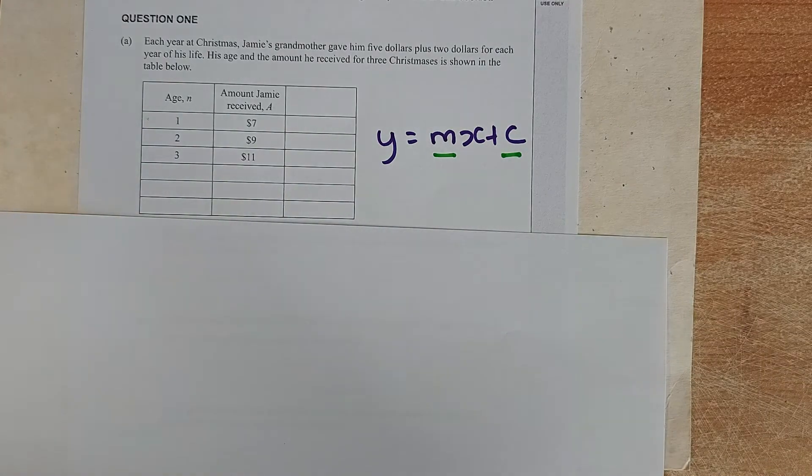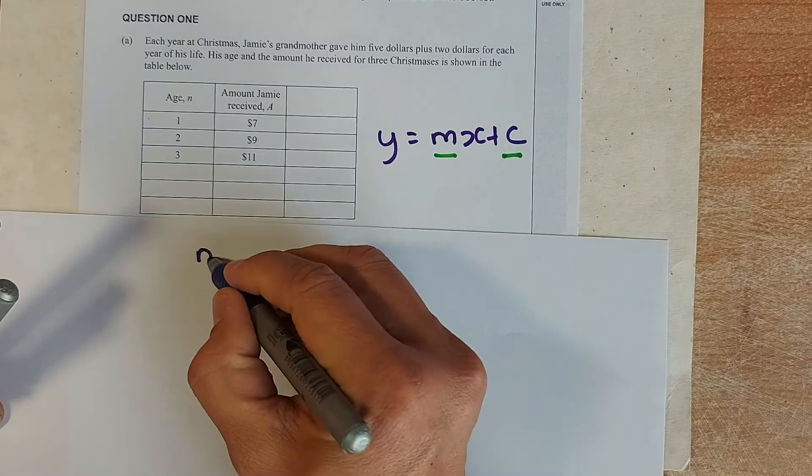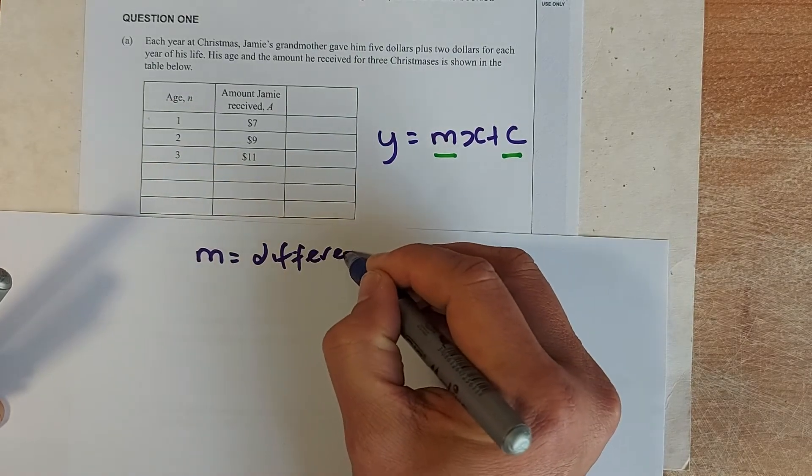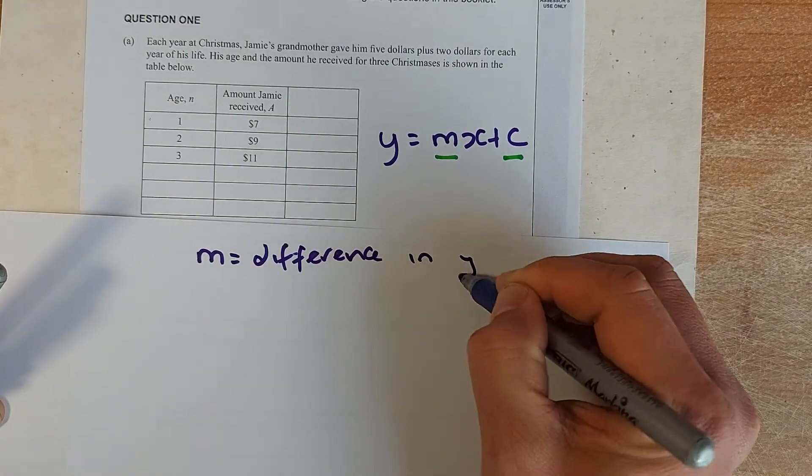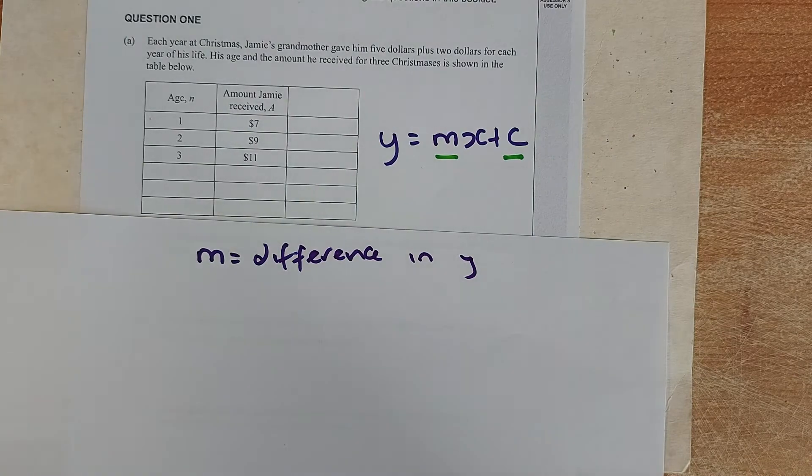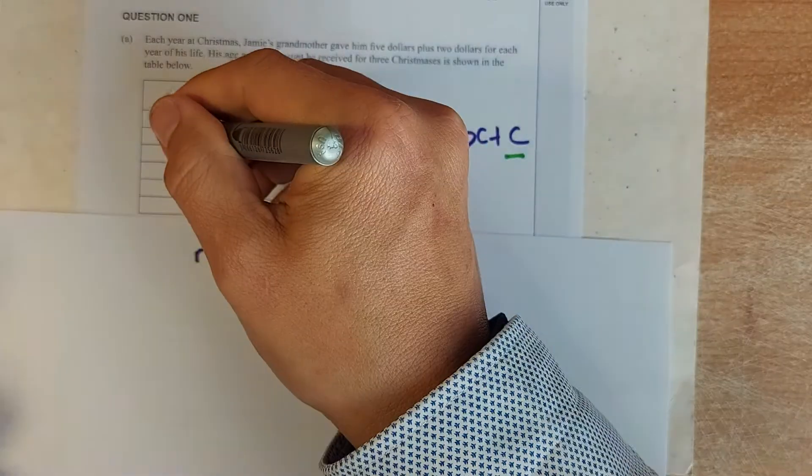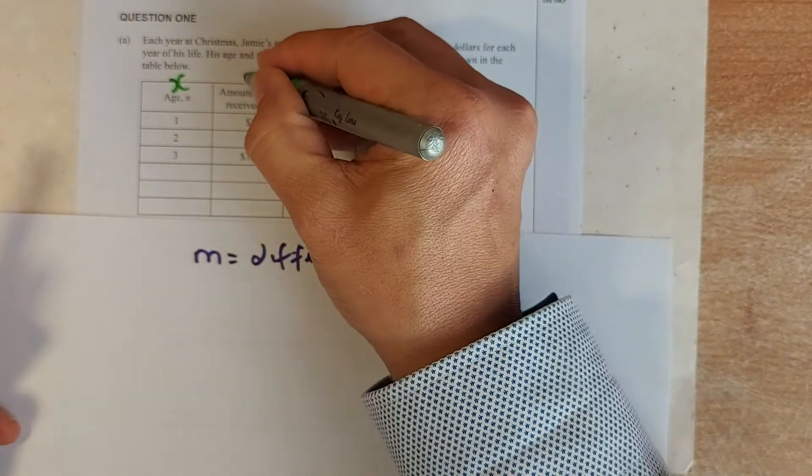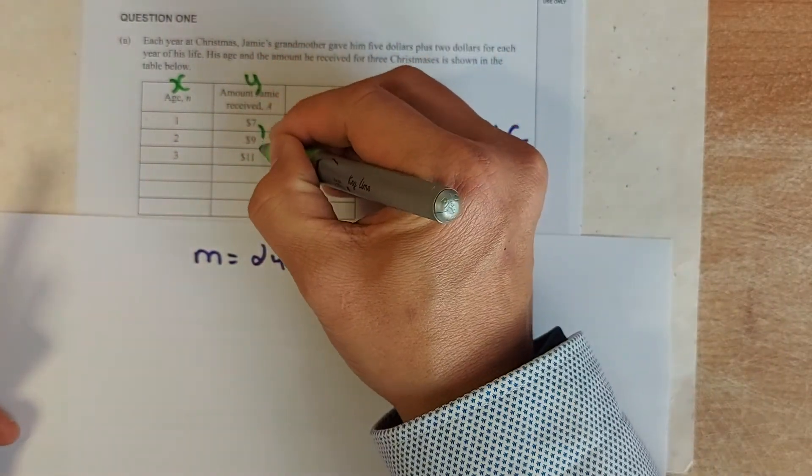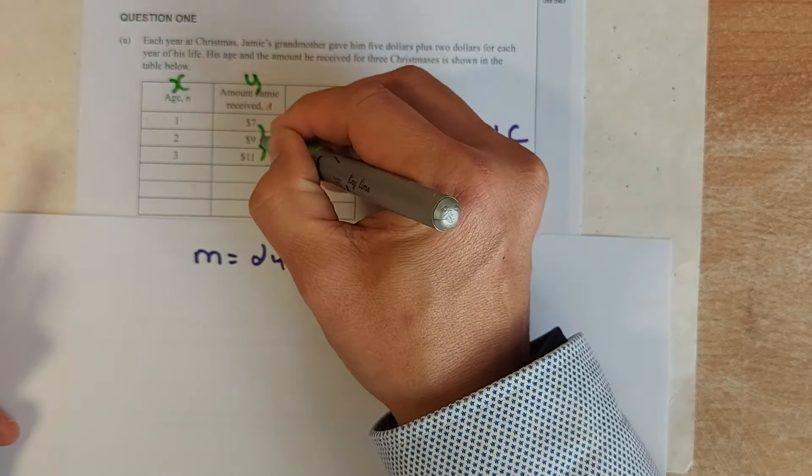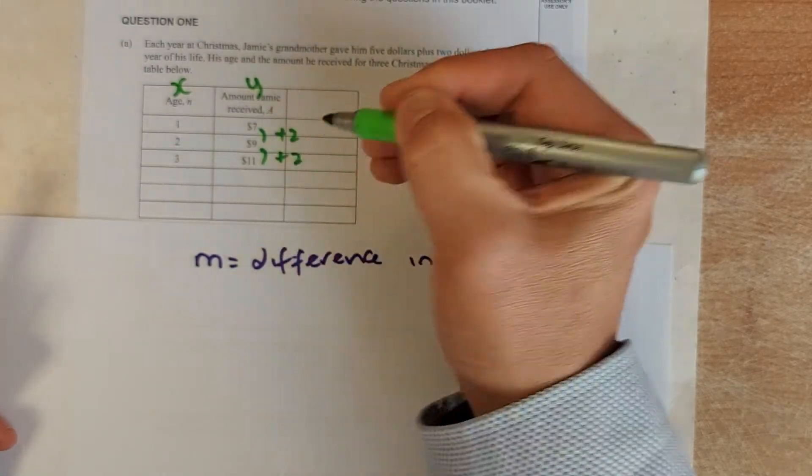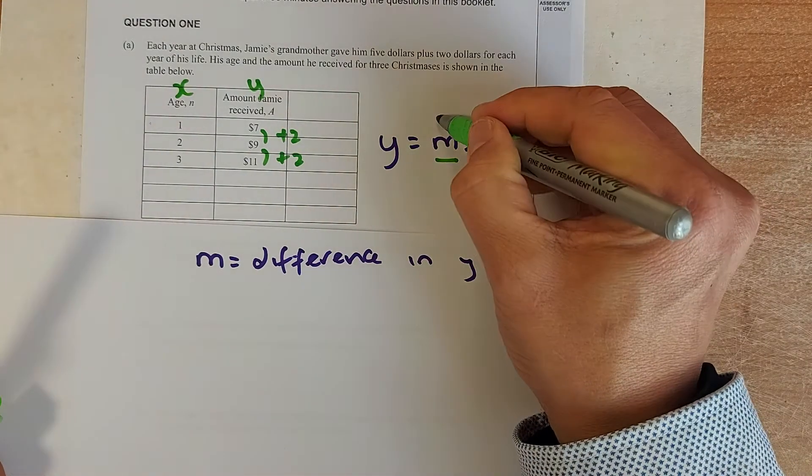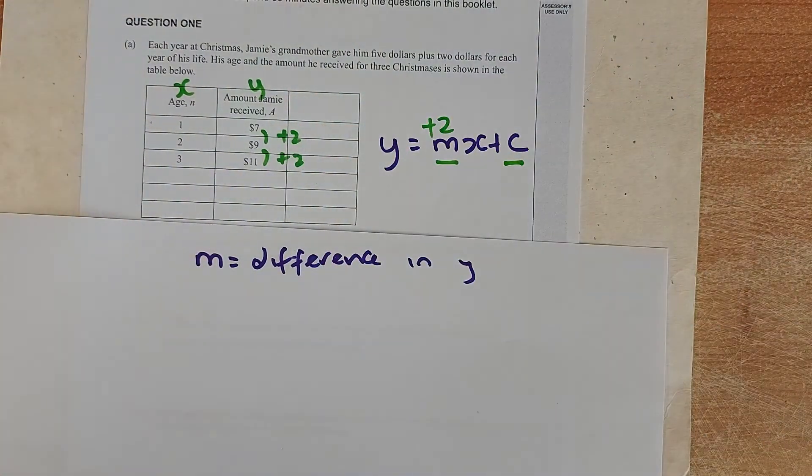So m is the difference in y. First you need to know which is x and which is y. X is normally on the left hand side and it always increases by 1. So this is going to be your x and this is going to be your y because they increase by 2. Each time from 7 to 9 is 2, 9 to 11 is 2. So m is the difference in y. So m equals 2 because it has increased by 2 all the time.